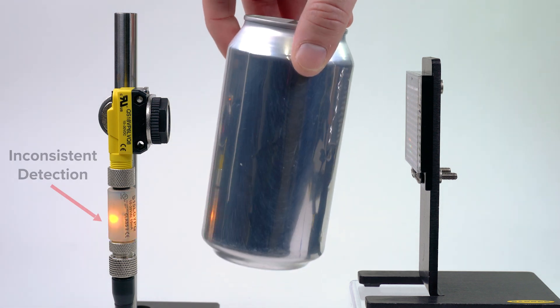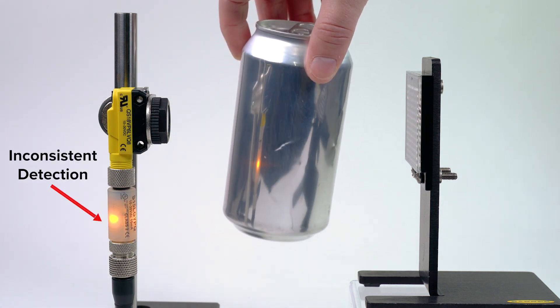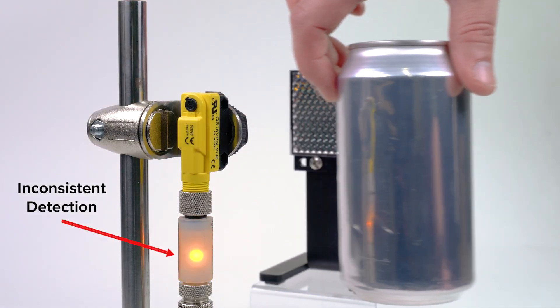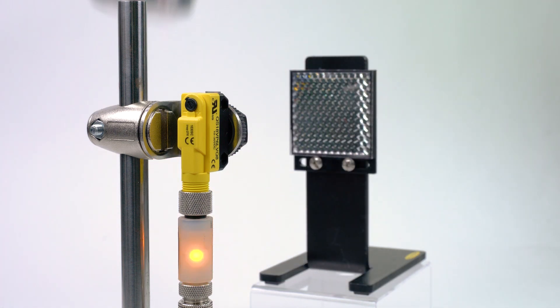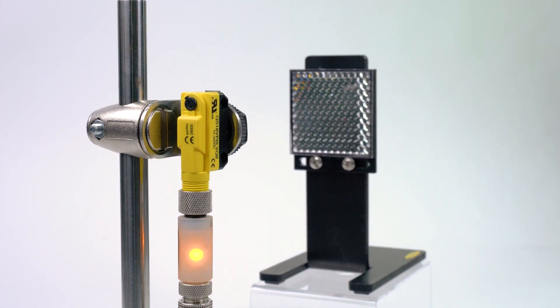If the target object has a highly reflective surface such as shiny metal, shrink wrapped packages, or reflective poly bags, a traditional retro reflective sensor may be unable to tell the difference between the object and the opposing reflector.